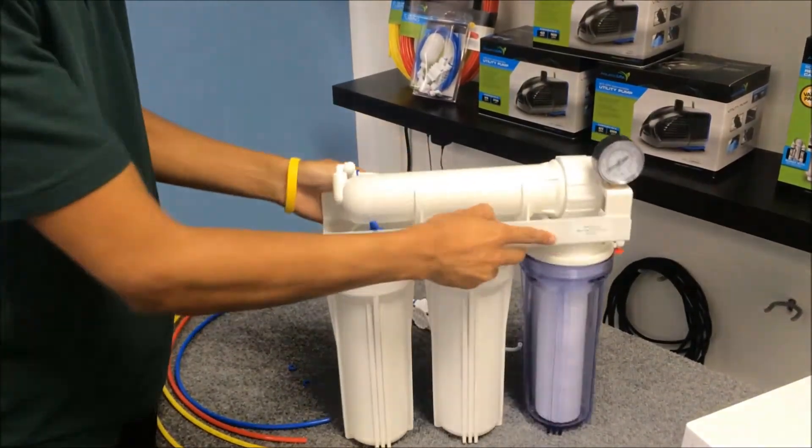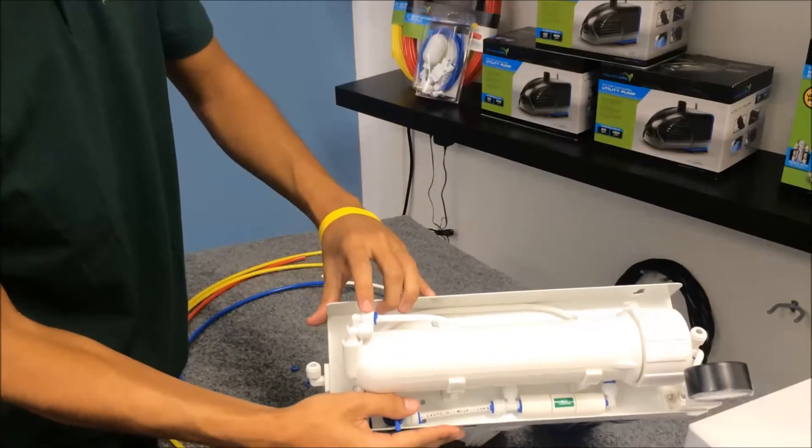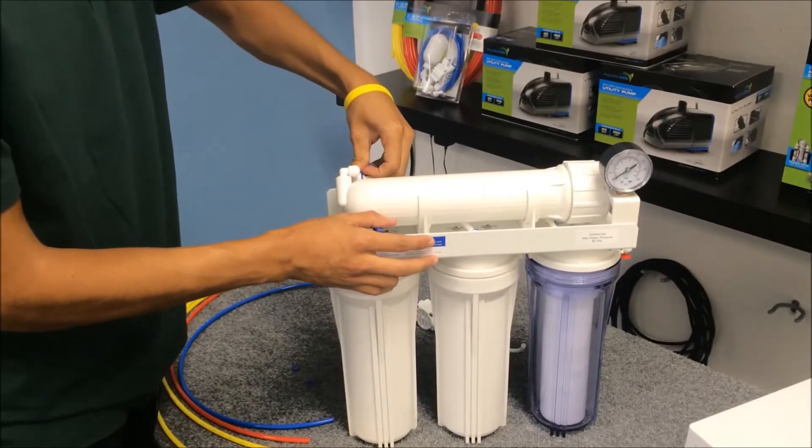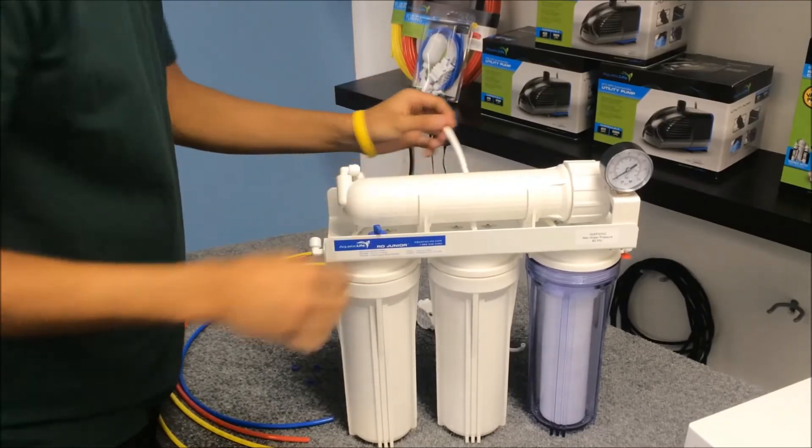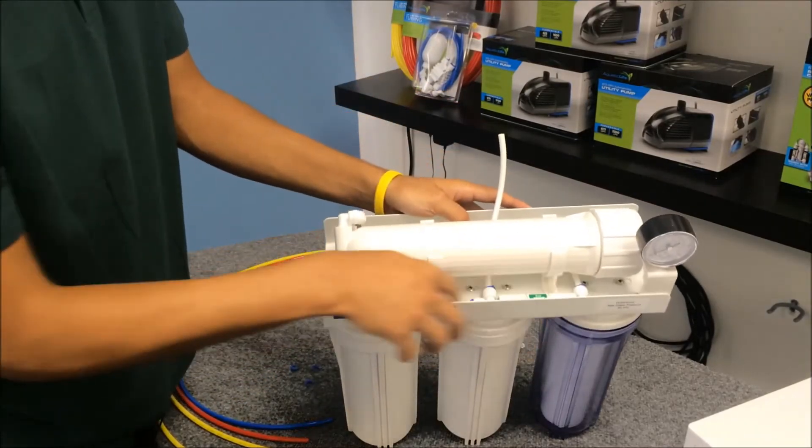And last but not least, we're going to remove our waste. Blue collar out, white collar down, and that gets rid of the flow restrictor.